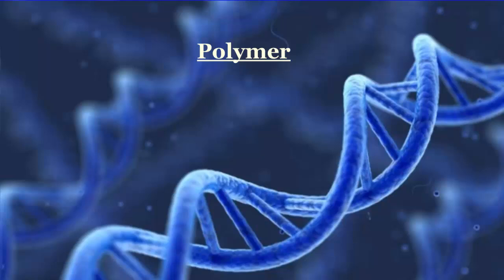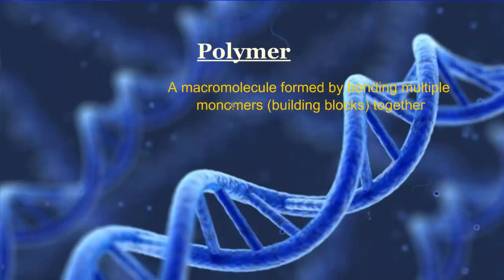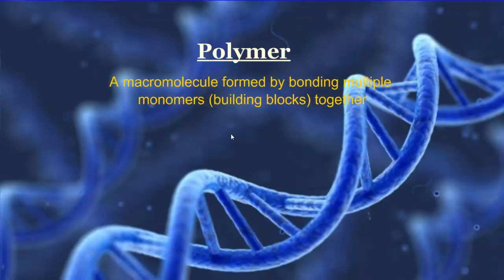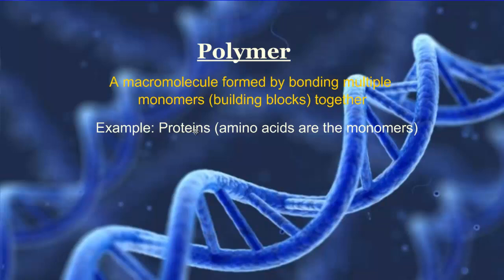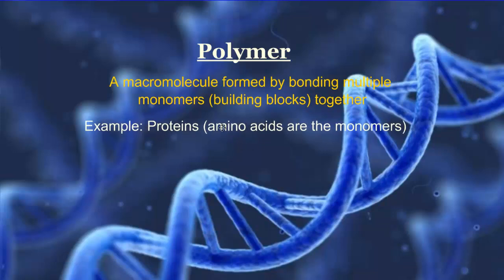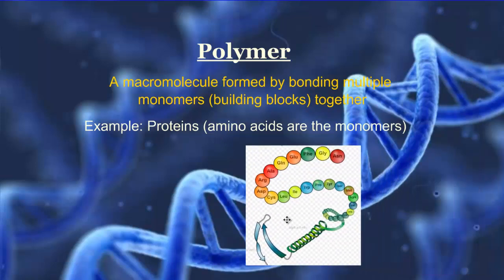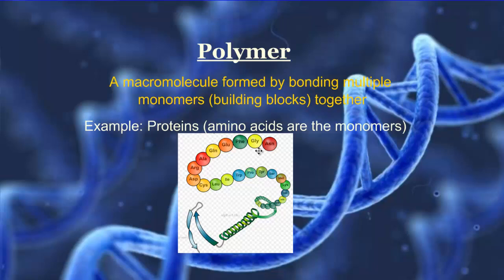A polymer — poly meaning many — is a macromolecule formed by joining lots of monomers or building blocks together. An example from biology is proteins: amino acids are the monomers that build the big polymer called a protein. In a picture you can see all the individual building blocks making up this huge molecule called the protein.